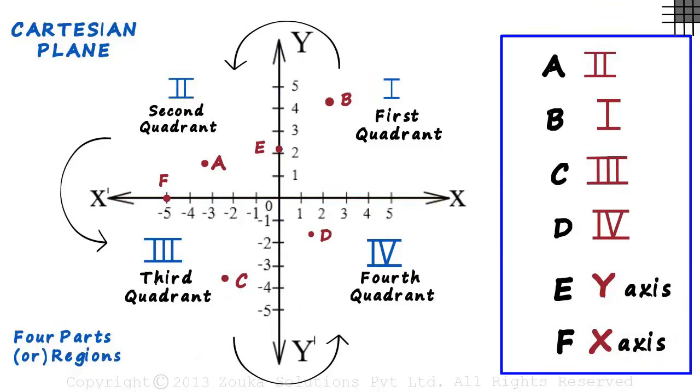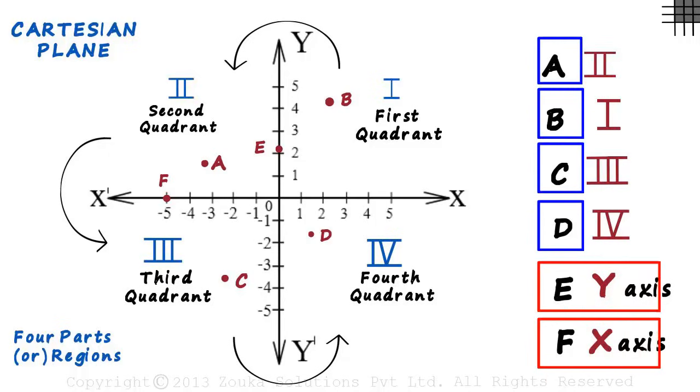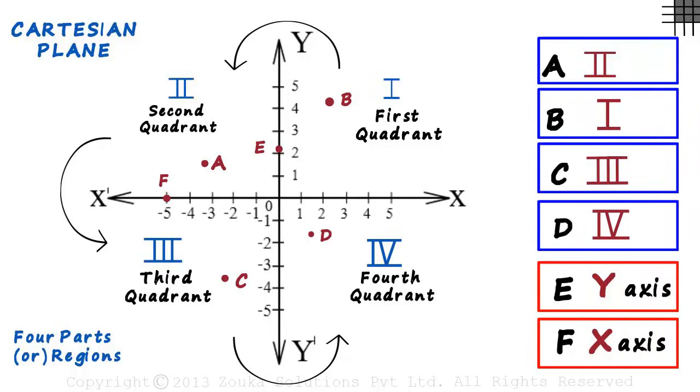What does this tell us? It means that each point on a plane lies either on one of the axes or in one of the quadrants.